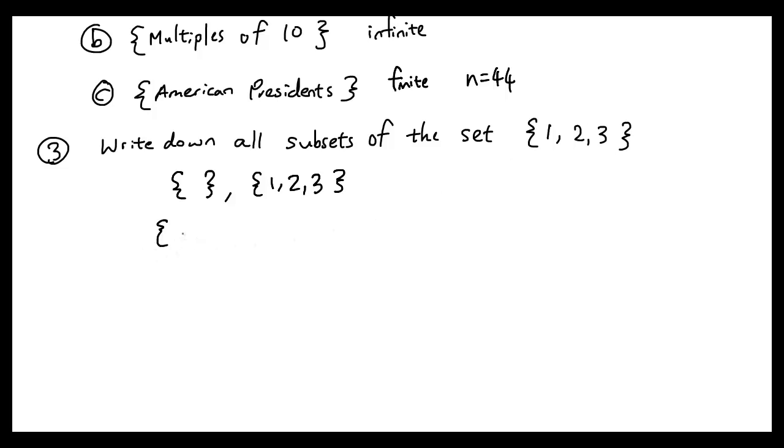And then we have each of the individual elements, and then we have combinations of the elements: {1, 2}, {1, 3}, and then we have {2, 3}. And then I can't think of any more.